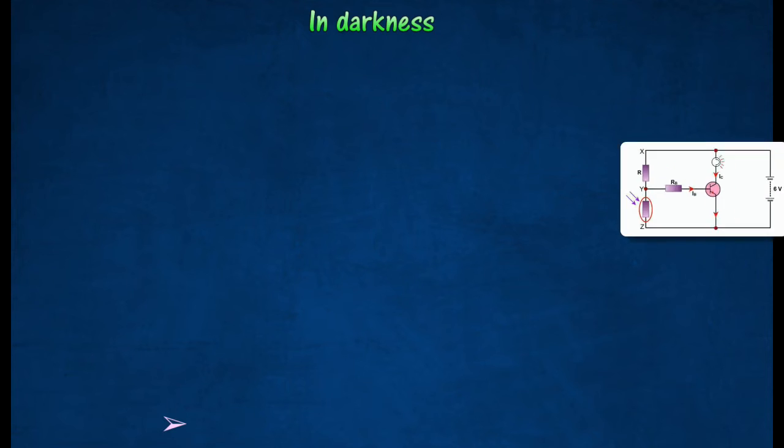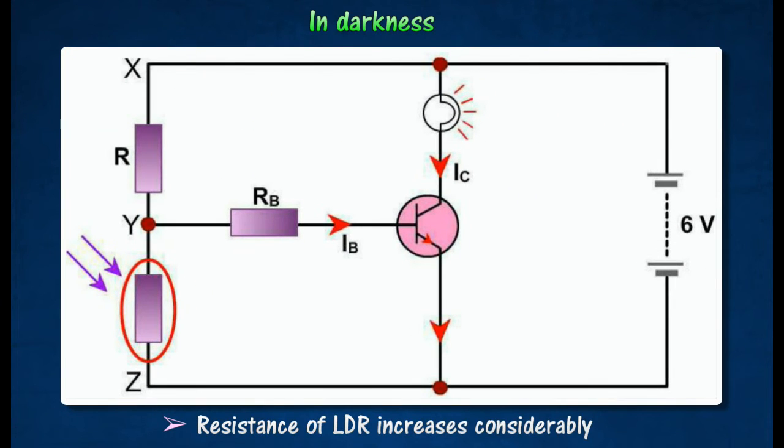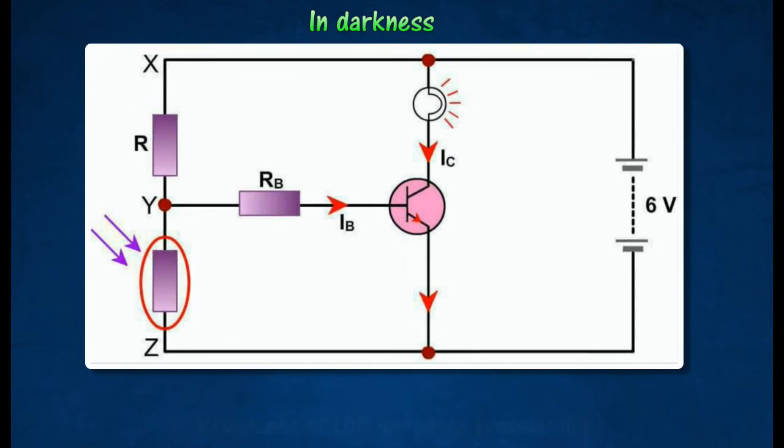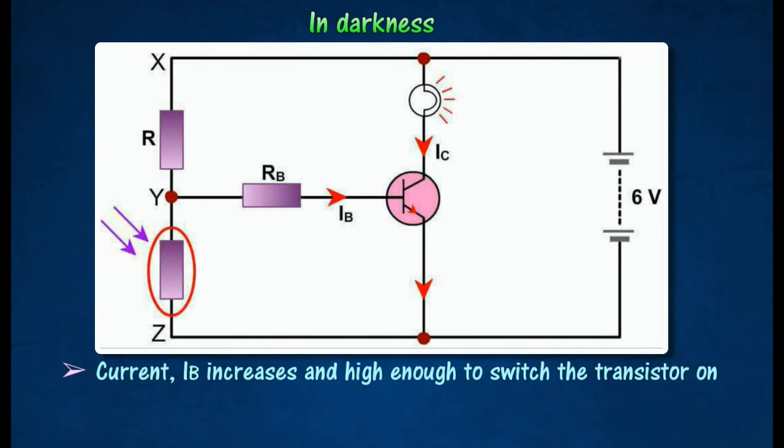In the dark, the resistance of a light-dependent resistor increases, so voltage across WIASAC increases. This causes the base current IB to increase so that the collector current IC produced is large enough to light up the bulb.